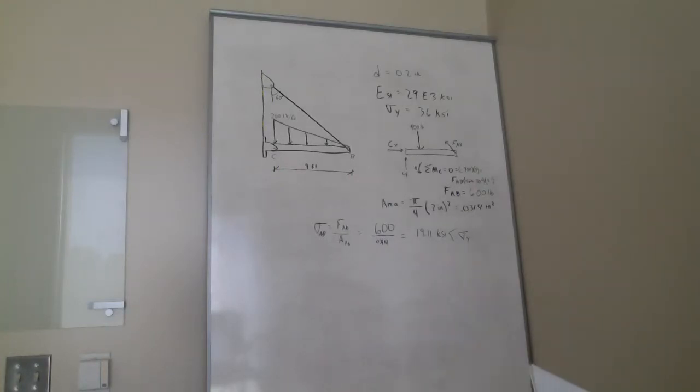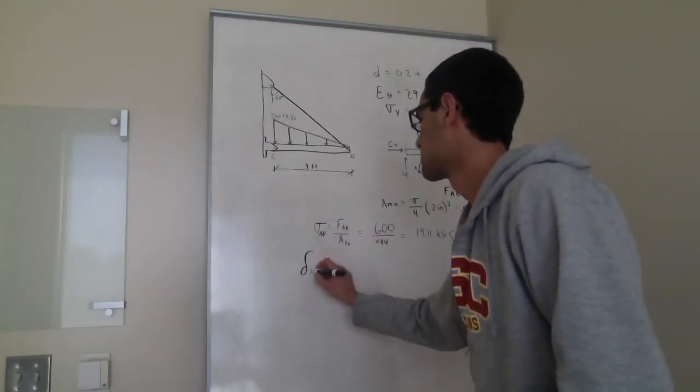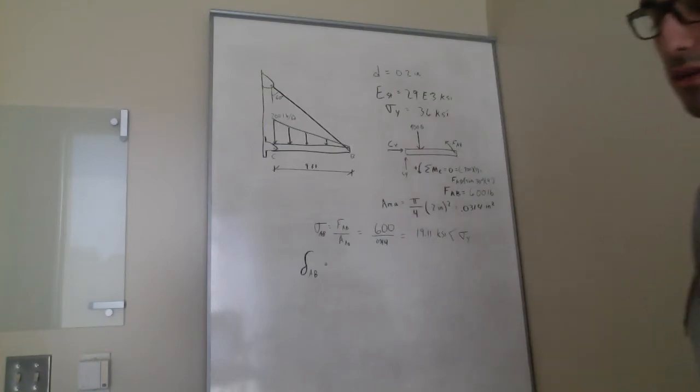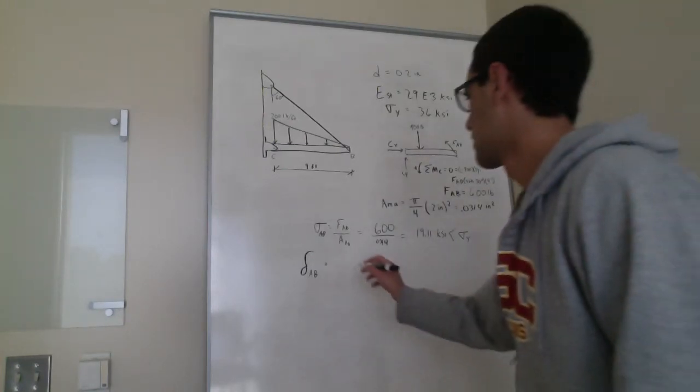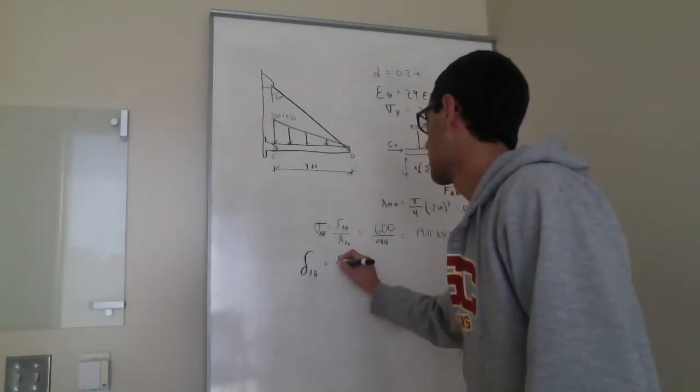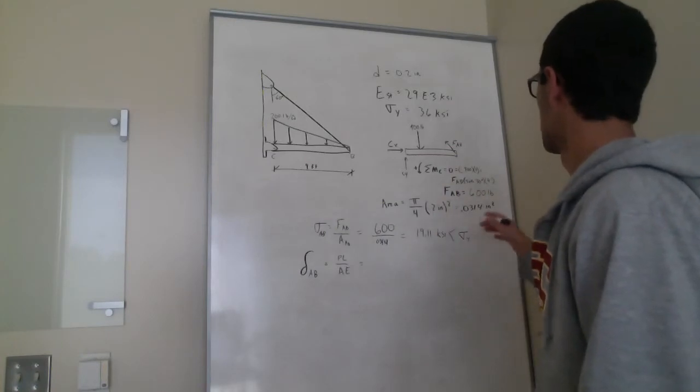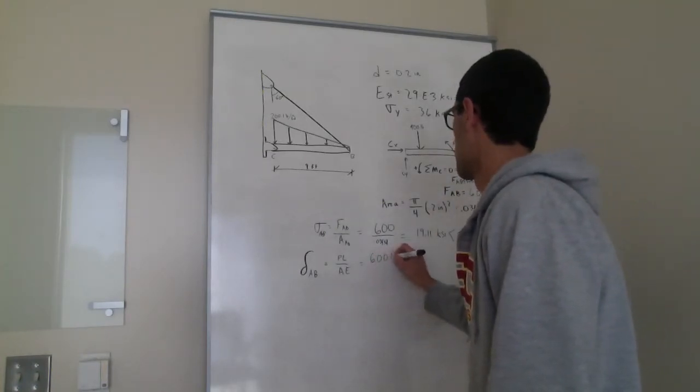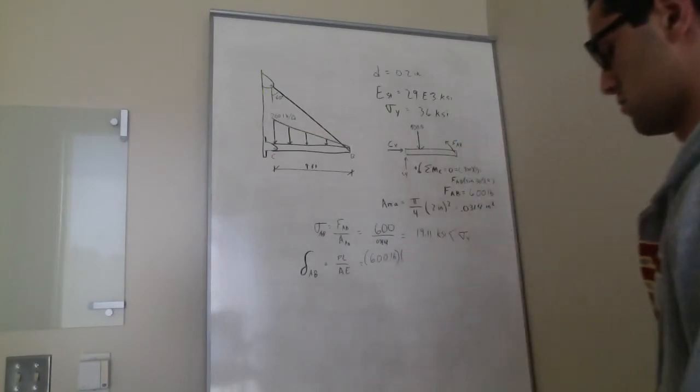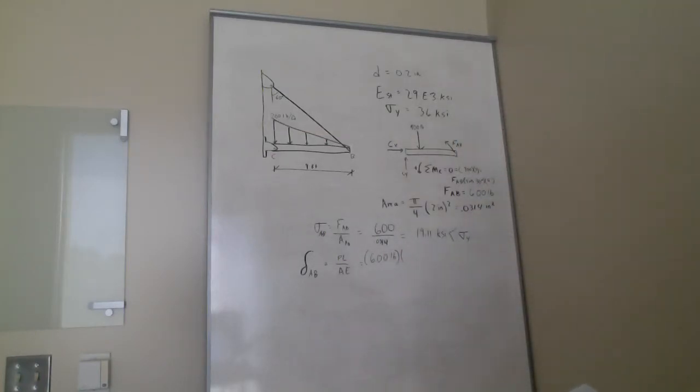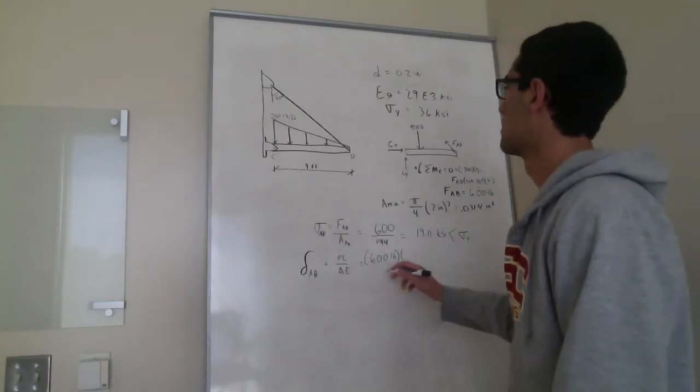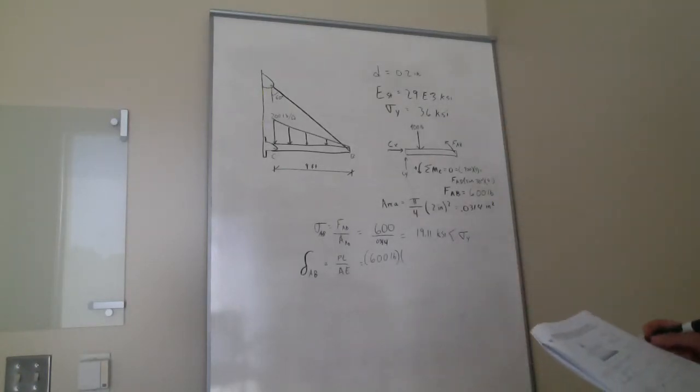And so the next part of the question asks what the stretch is, how much it stretches. So we can do displacement equals PL over AE. So P is 600 pounds. For length, we need to calculate that L for the wire.